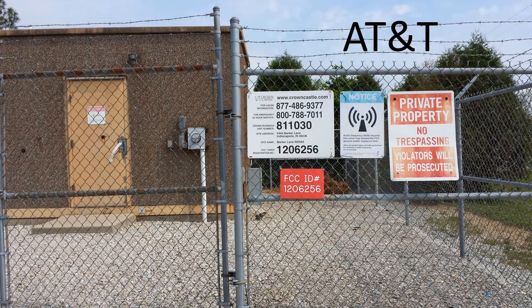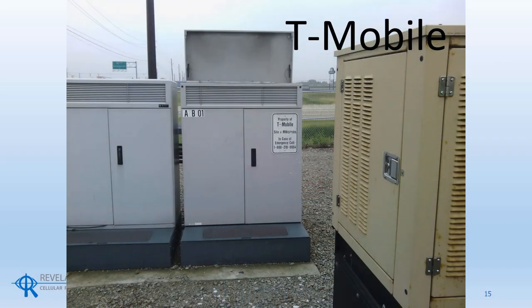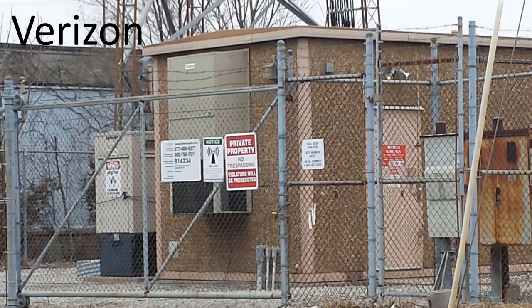AT&T almost always uses a shelter to house its ground equipment. AT&T also places a data plate on the door of the shelter that usually has the AT&T logo on it. The shelters are usually air conditioned and commonly have a generator nearby. Some AT&T ground equipment does not reside in a shelter, but it is usually clearly marked. T-Mobile equipment usually resides in gray cabinets but distinct from Sprint, and T-Mobile equipment is usually marked with a data plate. Like AT&T equipment, Verizon equipment is usually stored in the same type of shelter and has a Verizon data plate on the door. The shelters are usually air conditioned and have a generator nearby. Verizon may have equipment outside a shelter, but it is usually clearly marked.